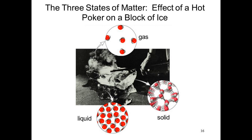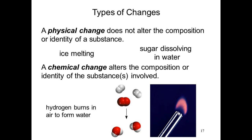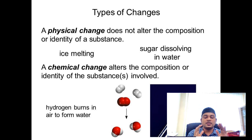Matter can exist either in solid, liquid, or gas. Moving to the next slide — I hope you still understand the difference. The matter can exist in solid, liquid, and gas. In chemistry, we have two types of changes: either a physical reaction or a chemical reaction.